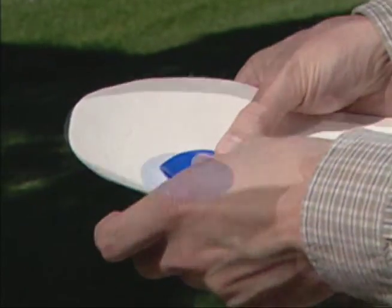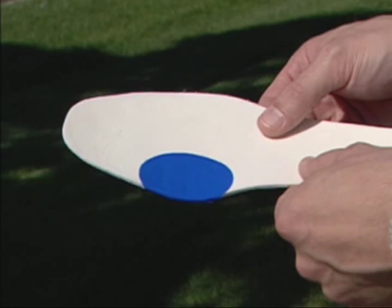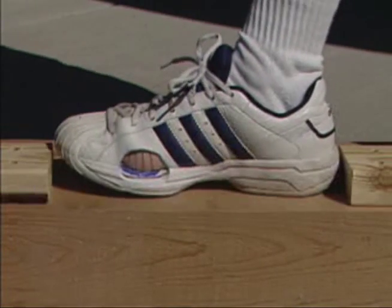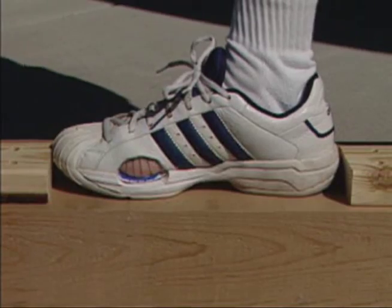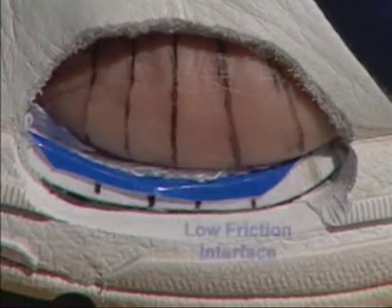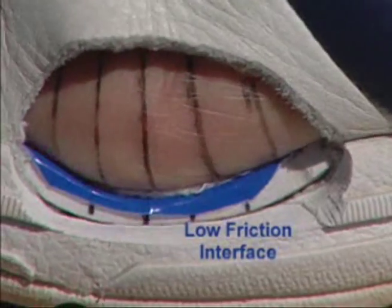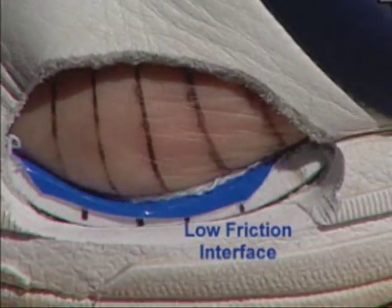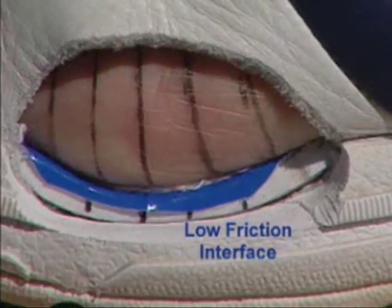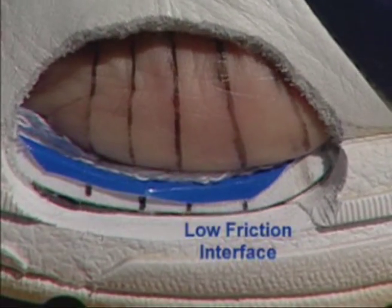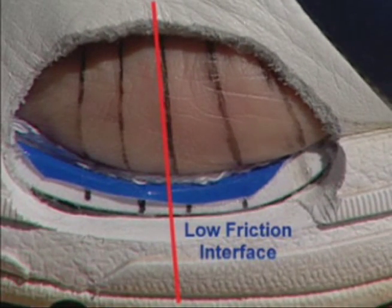Now look what happens when a low-friction PTFE interface with shear band technology is strategically placed on the insole under the at-risk tissue. Notice how the addition of the interface allows the line to move forward with much less distortion. With the addition of the interface, the friction-induced shear forces within the high-risk skin and soft tissues are controlled and do not reach the higher, more damaging levels each cycle.